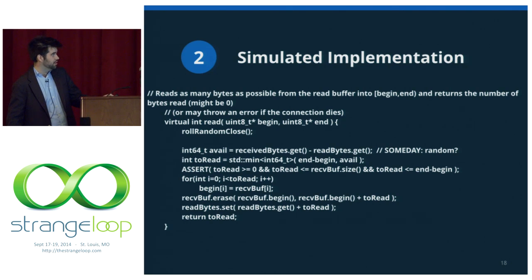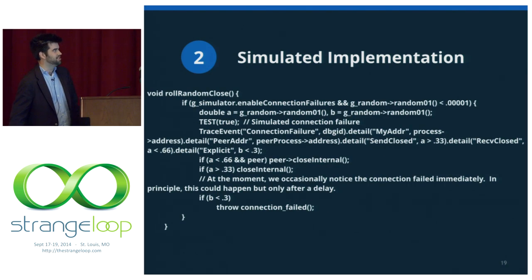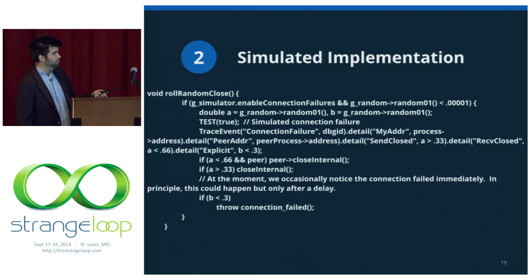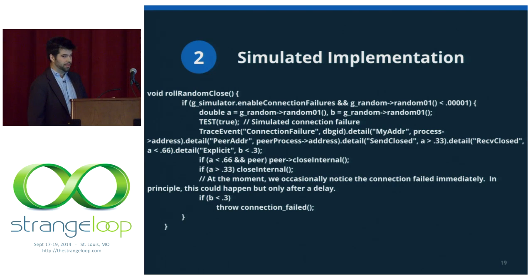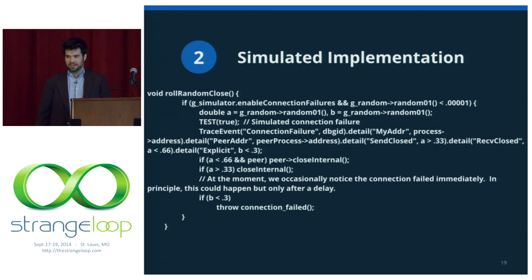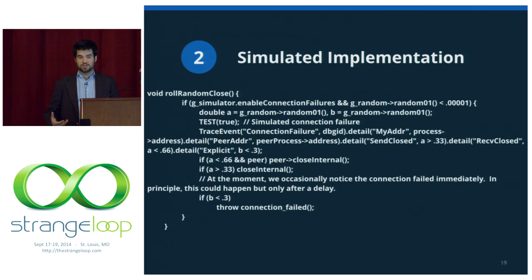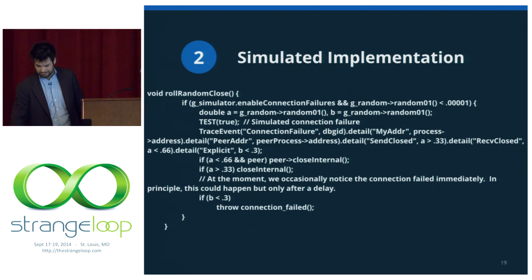One cool thing in the read method is there's a call to roll random close. This gets into the fun part of the talk — how we try to turn up bugs. Basically every time you try and read from the simulated network, there's a chance that something terrible will happen. We roll a random number, and if you get unlucky, there's a chance that your peer is just going to close the connection, there's a chance that you just close the connection, or the connection just fails and you receive an error. This is how we try to smoke out any code in our system that might have been assuming the network was reliable — which is a very foolish thing to assume.